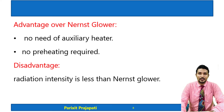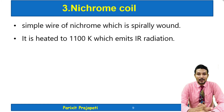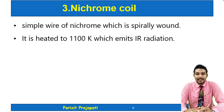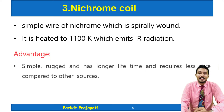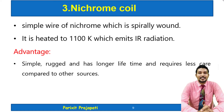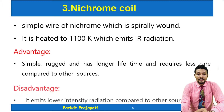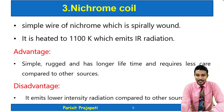The Nichrome coil is a simple wire of Nichrome which is spirally wound and heated to 1100 Kelvin, emitting IR radiation. Its advantages are that it is simple, rugged, has a longer lifetime, and requires less care compared to other sources. Its disadvantage is that it has low intensity IR radiation compared to other sources.